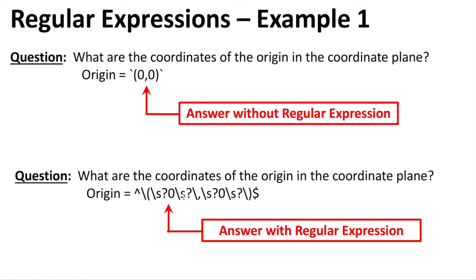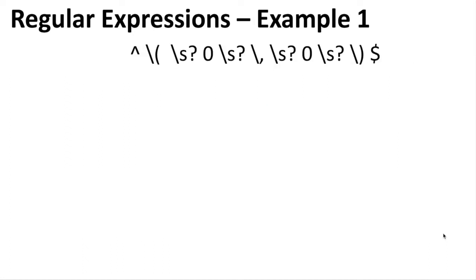Then the zero, then a blank space, then the comma — notice there's a slash before the comma. That's to say treat this comma as a comma and not as code. Then another blank space with a question mark making it optional, then zero. The carrot means the beginning of a regular expression and the dollar sign with no slash means the end. If I had a dollar sign with a slash, it would just treat it as a literal dollar sign.